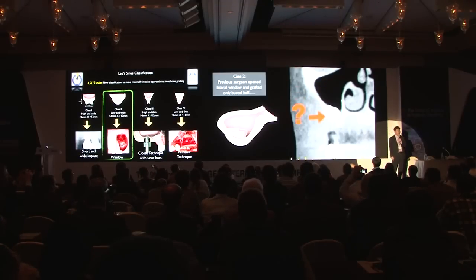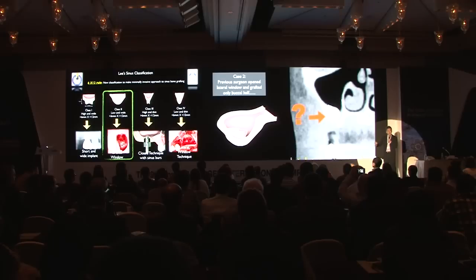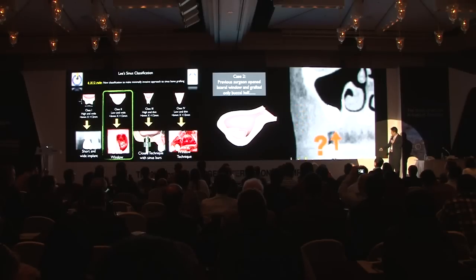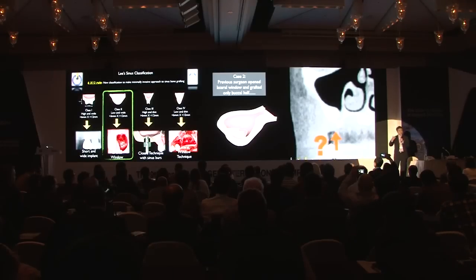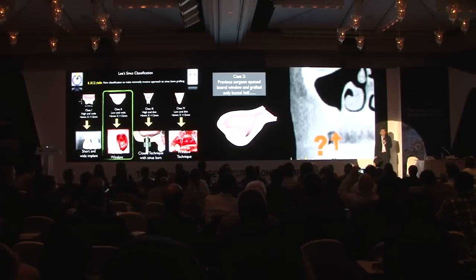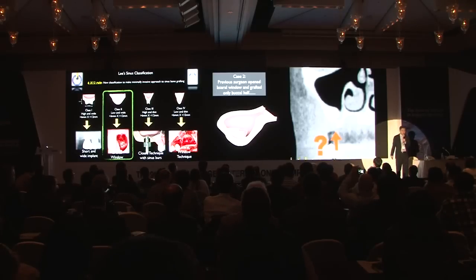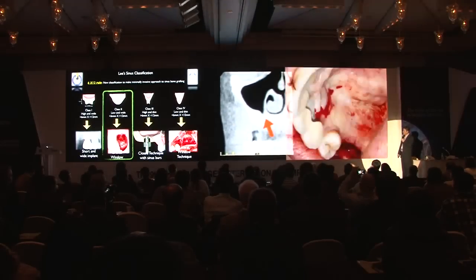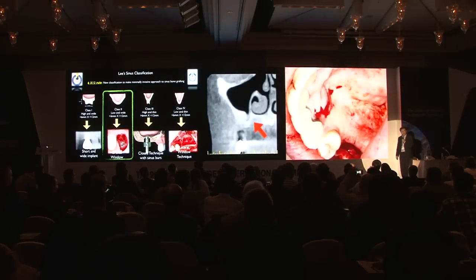The patient ended up with incomplete bone augmentation. In this scenario, it is difficult to open a lateral window now because the bone is too thick. A crestal window would also be very difficult due to unpredictable irregularities. So how can we salvage these cases when patients present with only 50% lateral augmentation done? After brainstorming, I decided to do a palatal approach.